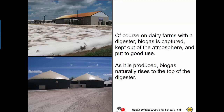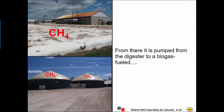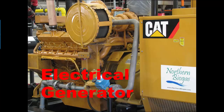On dairy farms with a digester, biogas is captured, kept out of the atmosphere, and put to good use. As it is produced, biogas naturally rises to the top of the digester. From there, it is pumped from the digester to a biogas-fueled electrical generator.